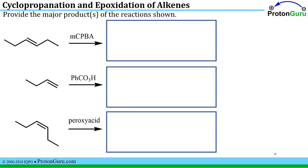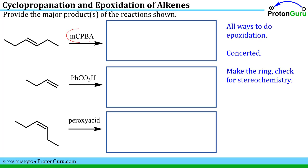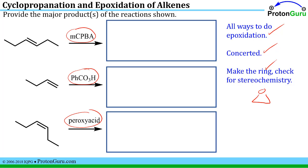Here we have three reactions and we're asked to provide the major products. All of these conditions — MCPBA, and these other species — are different representations of peroxy acids and are all ways to do epoxidation reactions. The epoxidation reaction is a concerted reaction, so there's no time for the direction of any groups to change during the course of the reaction. All we have to do is make the ring and check for stereochemistry — the epoxide ring being a three-membered ring with an oxygen.